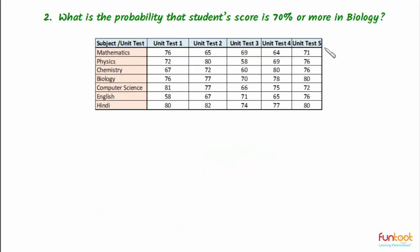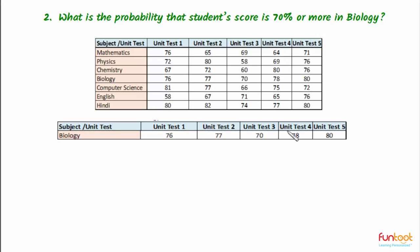Let's do the second part. What is the probability that the student's score is 70% or more in biology? We have separated the data for the score of the student in biology. In all 5 tests we can see that the student has scored 70% or above marks: 76, 77, 70, 78, and 80 — all 70% or above.